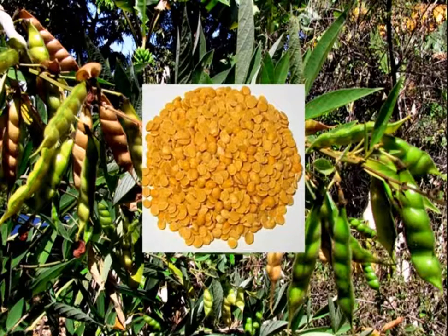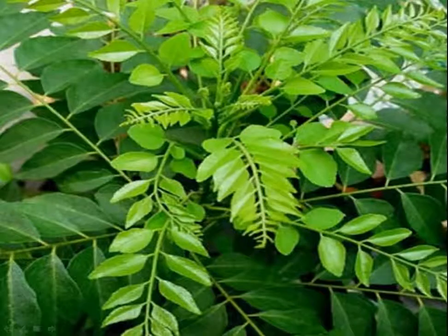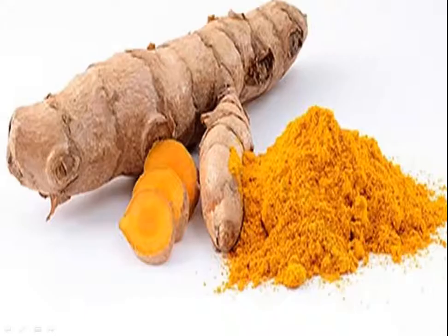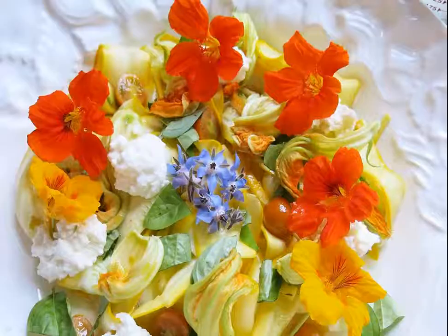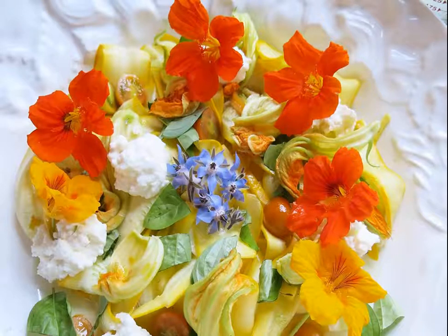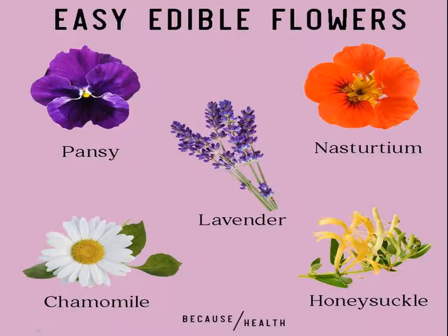To summarize: toor dal is the seeds part, drumstick is the fruit part, curry leaves are the leaves part, and turmeric is the stem part of the plant. Some flowers are also used in salads, preparing dishes, or garnishing meals. The flowers which are edible should be free from any kind of chemical sprays.